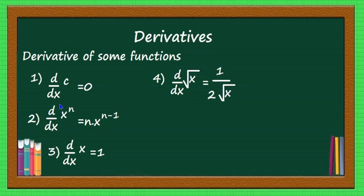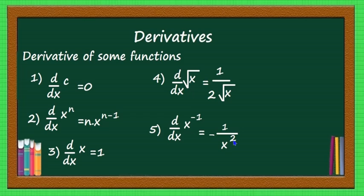This power rule formula is applied to get that result. Next, d by dx of x to the power minus 1 is equal to minus 1 by x squared. When n equals minus 1, it is minus 1 into x to the power minus 2, that is minus 1 by x square. Remember this.